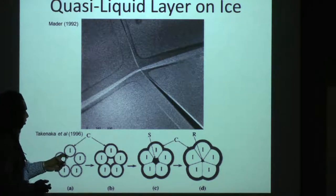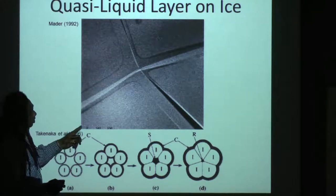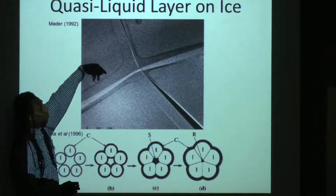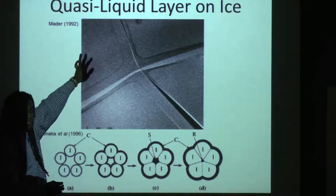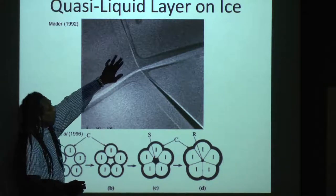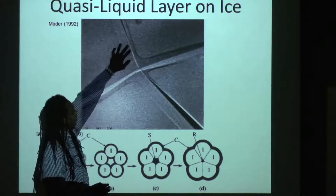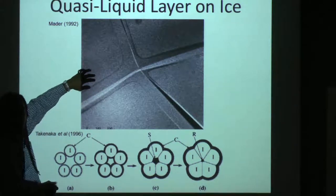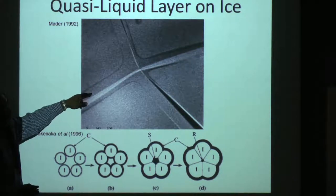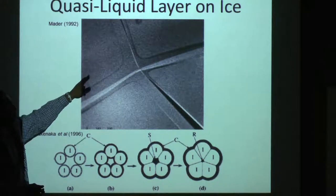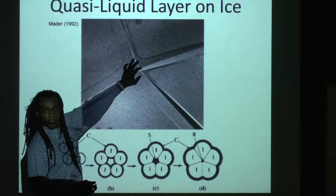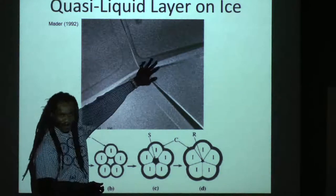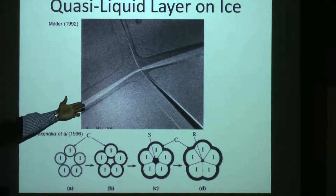This is a scanning electron microscope image — a low-temperature SEM image at about minus 11 degrees Celsius, looking at ice. What you see here is a water vein about 50 microns thick, and this is the ice lattice. Most things, when you freeze them, actually segregate from the ice lattice and migrate into these regions — this is where most of the chemistry happens.